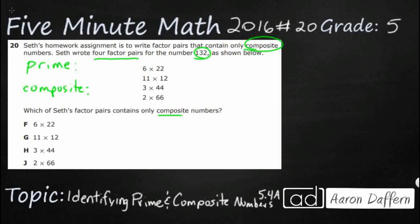So prime numbers has only two factors and those numbers are one and itself. I'll show you what that means in just a second. So those are prime numbers.